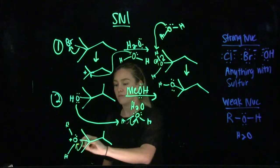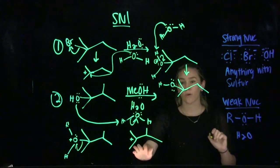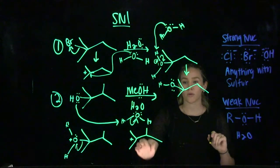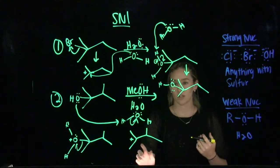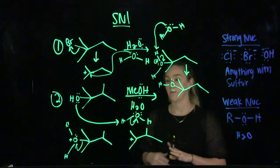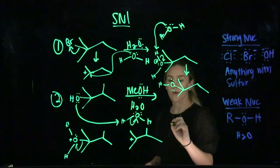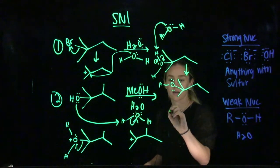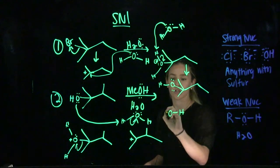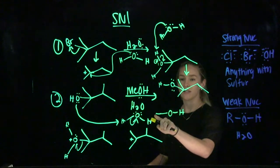Now step two, we're going to have our leaving group leave. We have a carbocation, so what do we need to check for? A carbocation rearrangement. In this case, again, we have a tertiary carbocation, so we don't need to do a rearrangement. In some cases, you will have to though. So next, we have our nucleophilic attack. You have MEOH as your nucleophile, and this actually looks like OH with a methyl group attached. ME just means methyl, so this right here is a CH3.